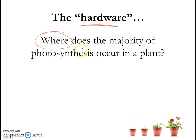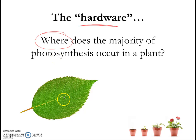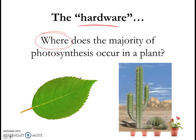Where does photosynthesis occur in a plant? We know what photosynthesis is and what it does, but where does it occur? The majority of it occurs in leaves, because leaves are where we have our chlorophyll, and it is in the hardware of the leaves that photosynthesis takes place. Of course, there are some plants with modifications — here is a cactus, where a lot of photosynthesis also takes place in the stem, which contains chlorophyll.